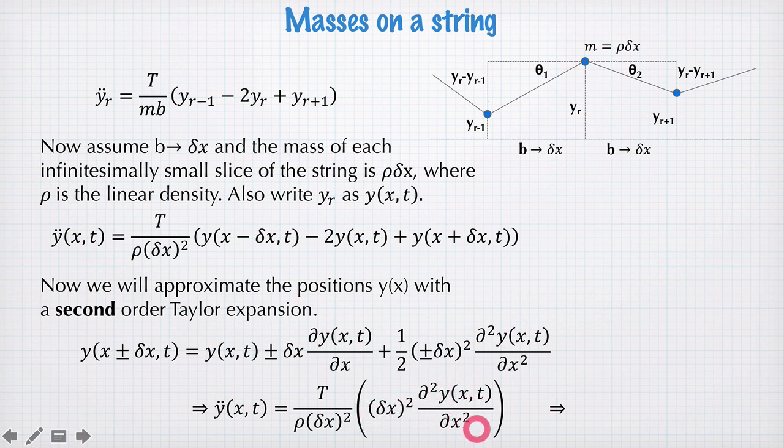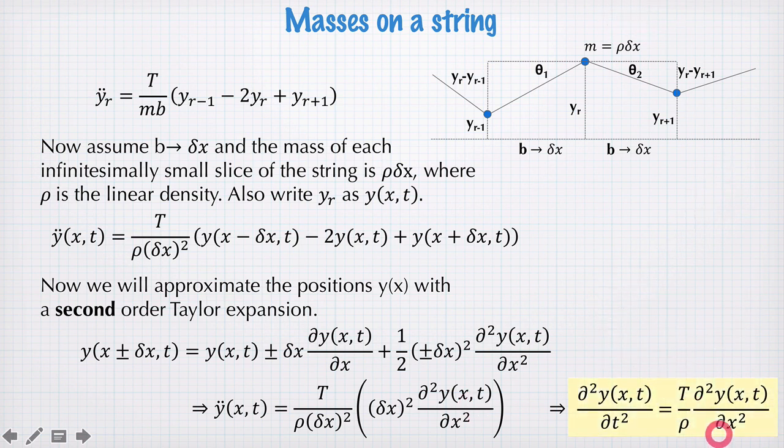And now we have a second order spatial derivative of y. And what that gives us is this equation here, which is the wave equation that we've been trying to derive. So we've got a second order time derivative on this side, second order spatial derivative on this side, both partial derivatives.